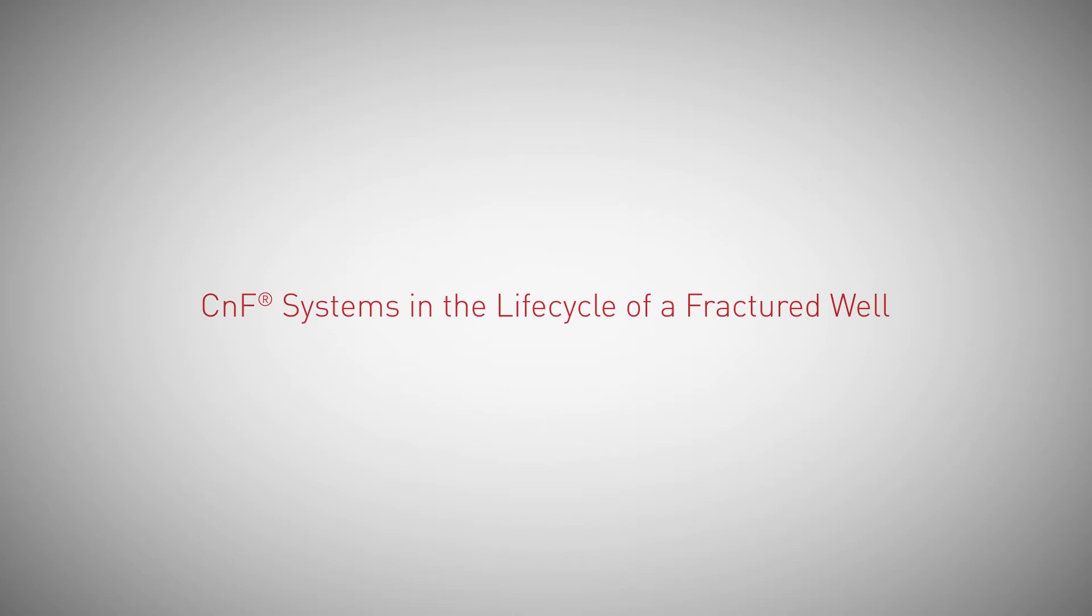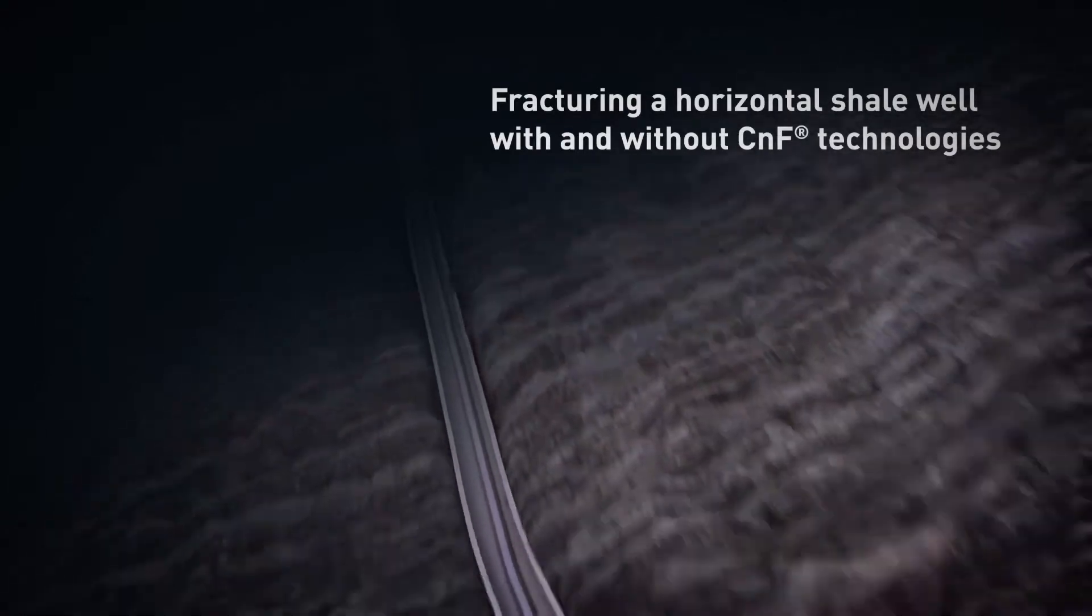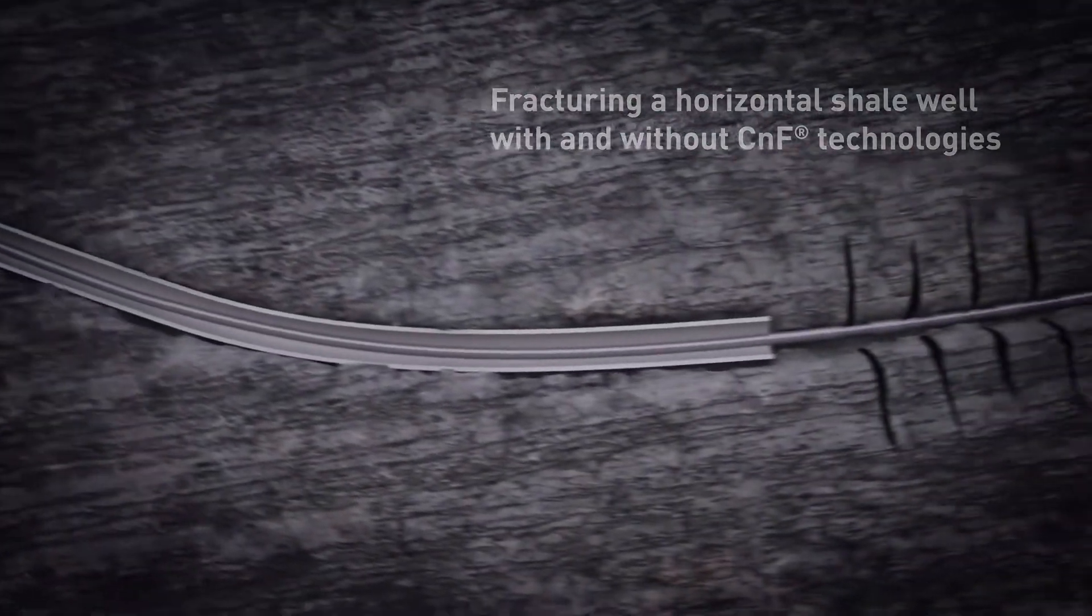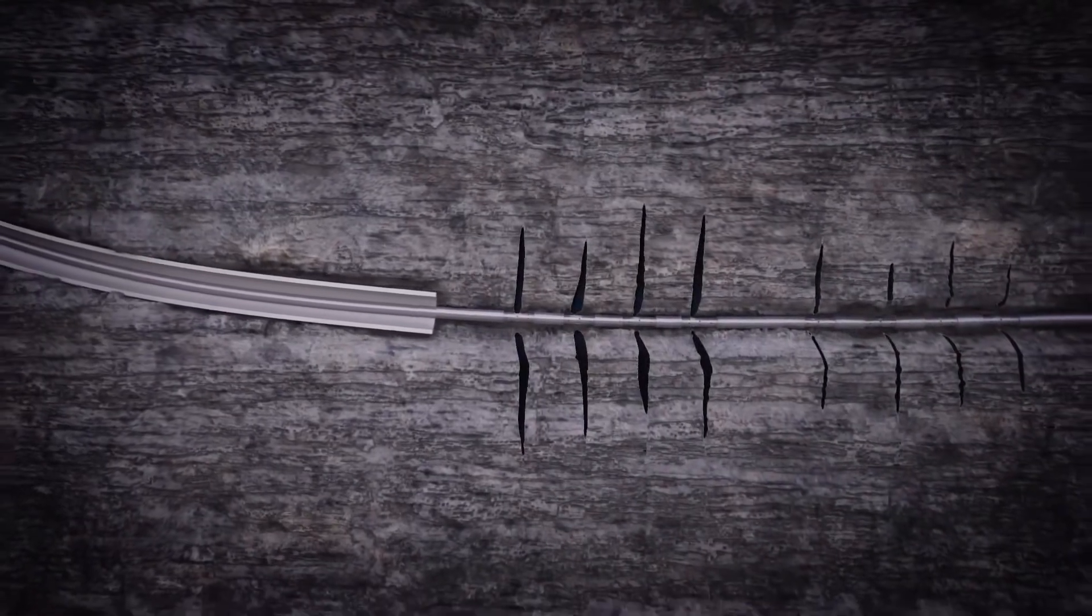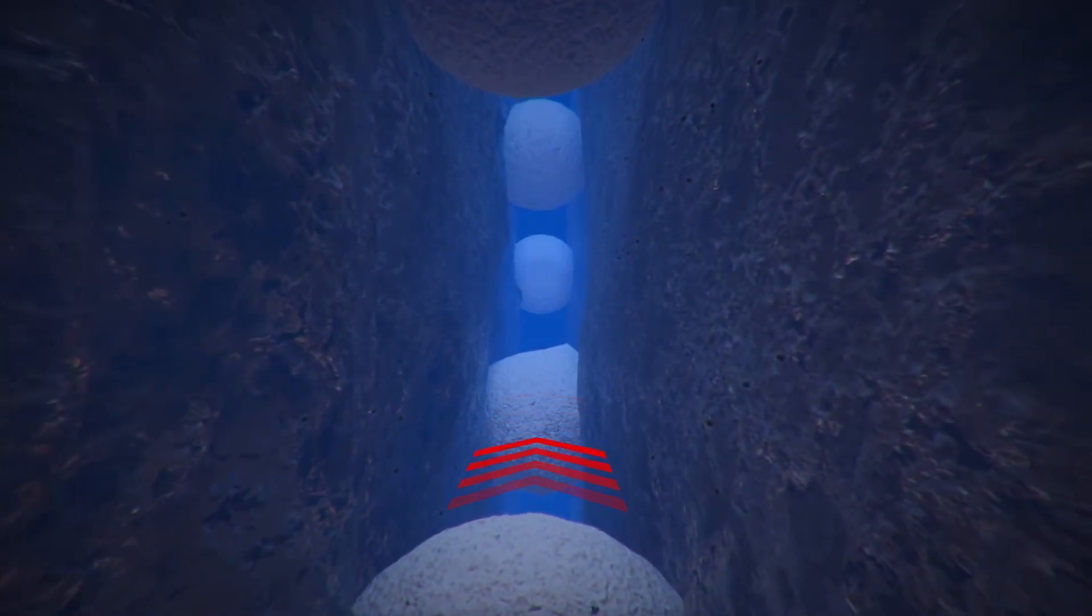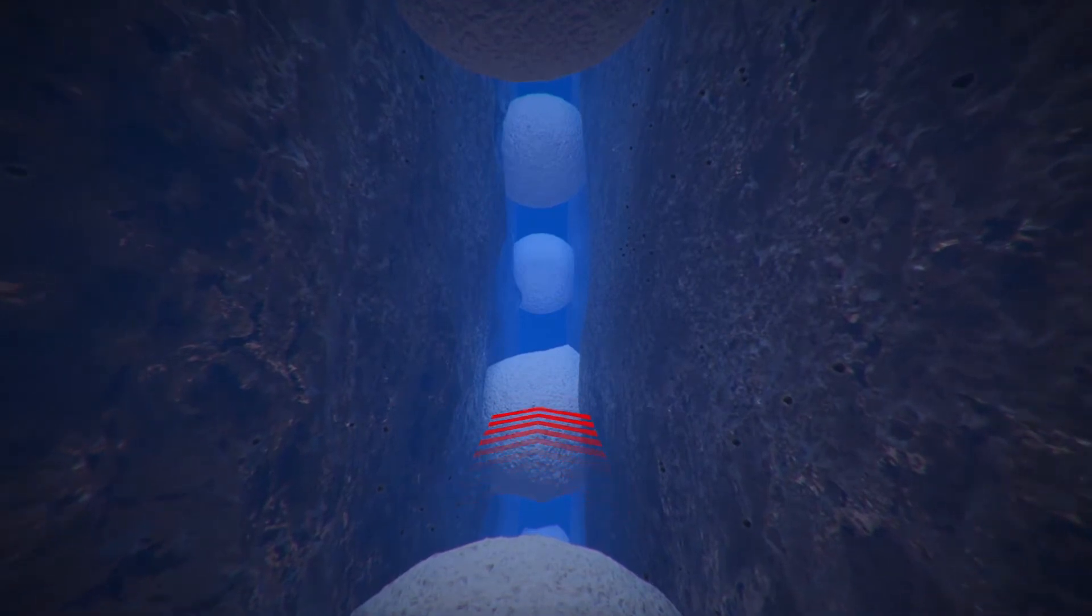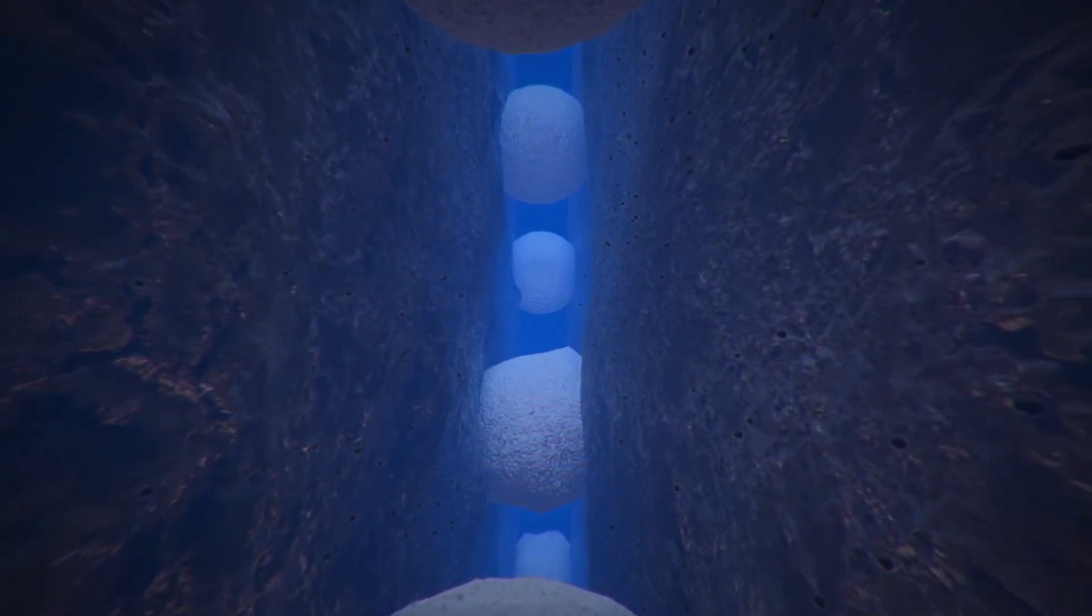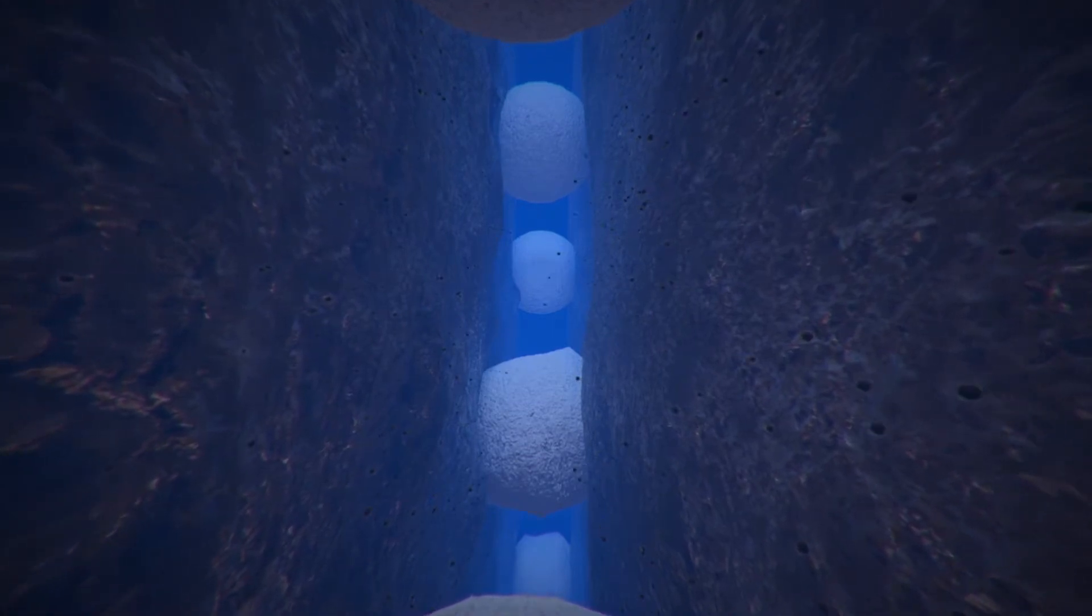CNF systems in the life cycle of a fractured well: fracturing a horizontal shale well with and without CNF technologies. Multi-fractured shale well laterals provide greater surface flow area critical to enhanced economic production, while millions of gallons of fracturing fluid create the much-needed surface area. The fluids and treating conditions can trap water and damage some of that area.